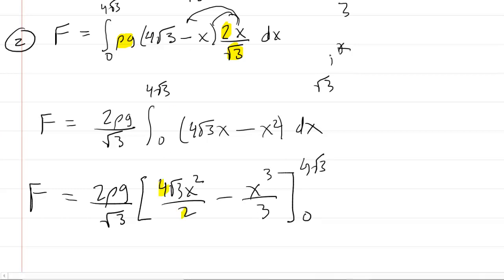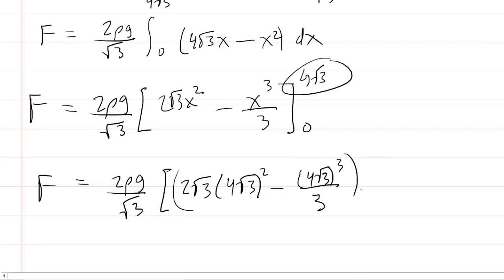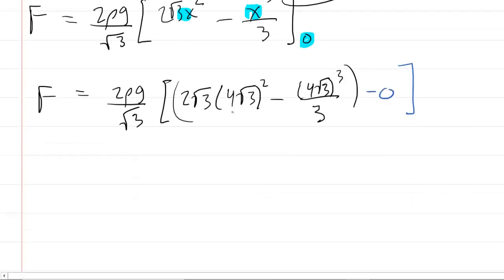You can simplify a little bit. I guess four divided by two is just two. So we can actually just clean that up and make that a two. We'll plug in the upper bound first, of course. Two rho g over radical three. We're going to have two radical three times four radical three squared minus four radical three cubed over three. That's the upper bound. Luckily, the lower bound is zero. So when you plug zero into those x's, they just zero out. So you're going to end up subtracting nothing there. So that simplifies our lives slightly. Let's go ahead and square the four radical three. So you're going to have 16 radical nine, which is 16 times three, which is 48.